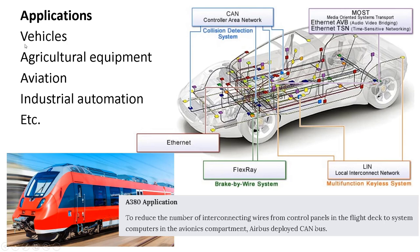Here we see a car that has not only a CAN network but also an Ethernet network, a FlexRay network, a LIN network, and a MOST network. So not all the nodes inside the car are communicating using the CAN protocol. Also inside the car you will have routers that route the signal from one network to another.